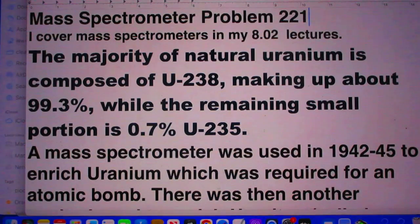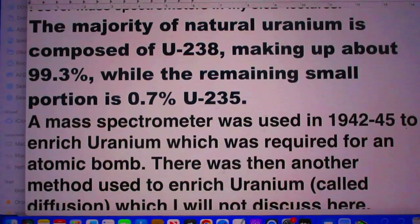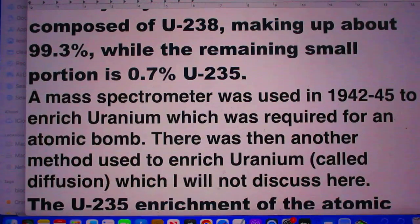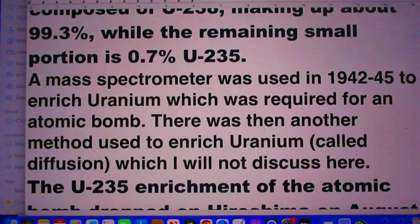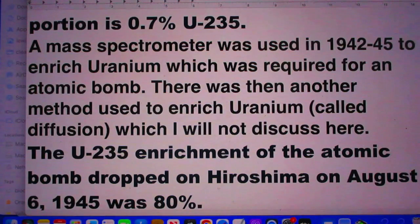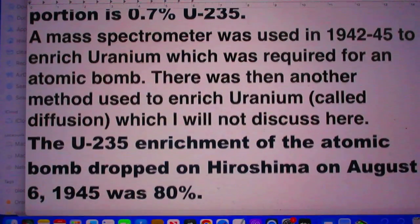The majority of natural uranium is composed of uranium-238, making up about 99.3%, while the remaining small portion is only 0.7% uranium-235. A mass spectrometer was used in the period 1942 to 45 to enrich uranium, which was required for an atomic bomb.